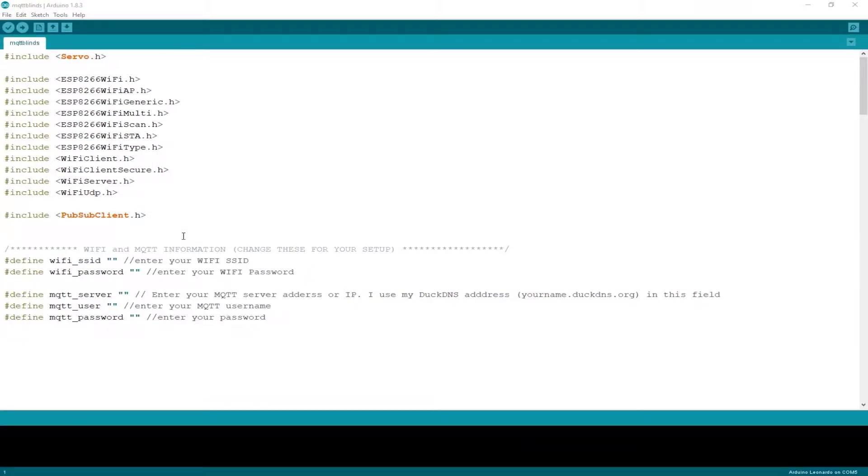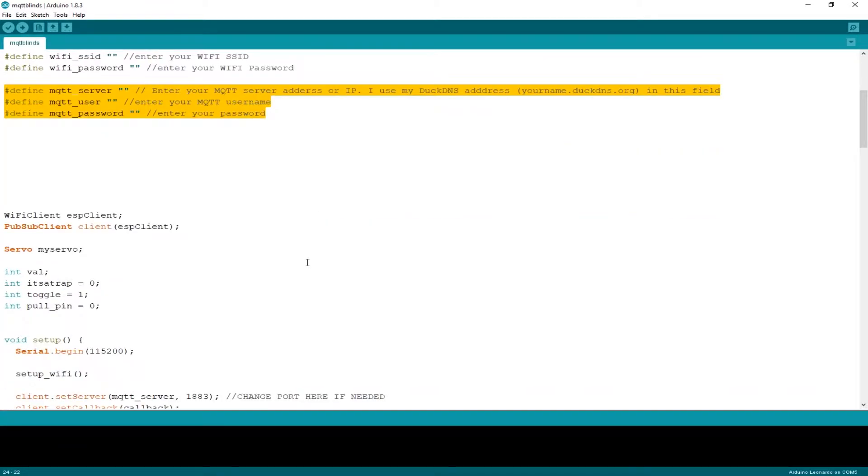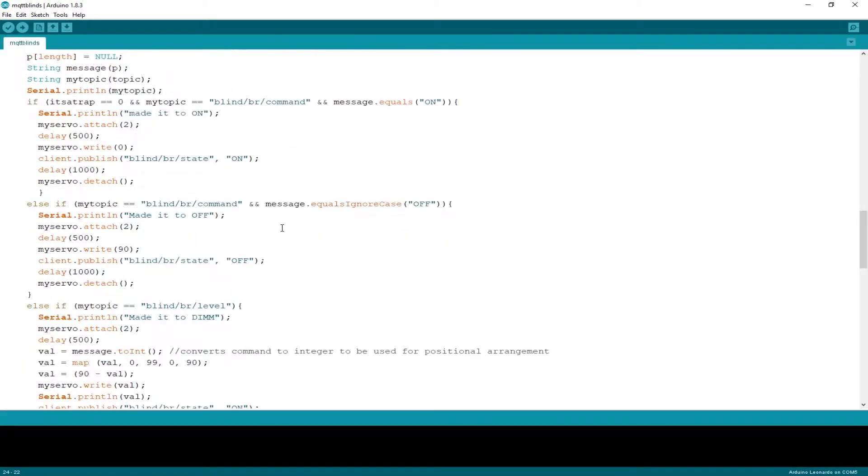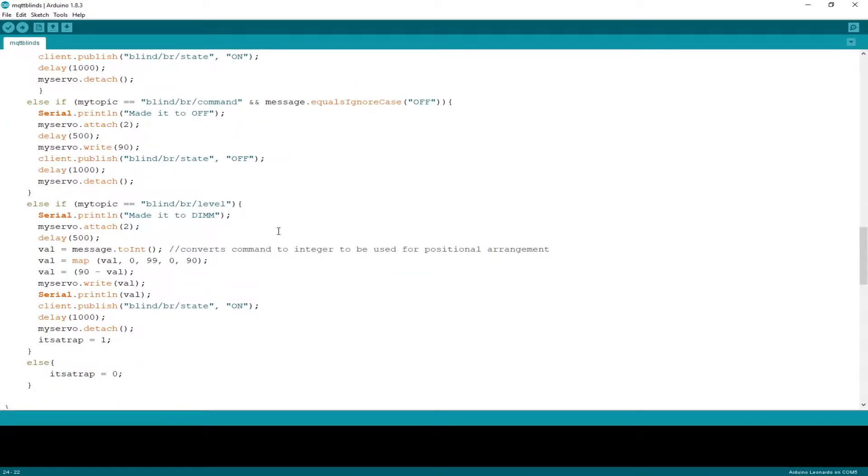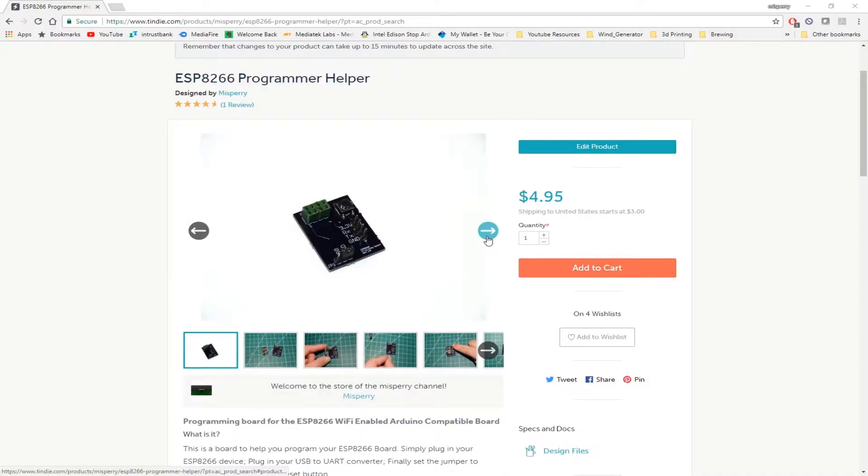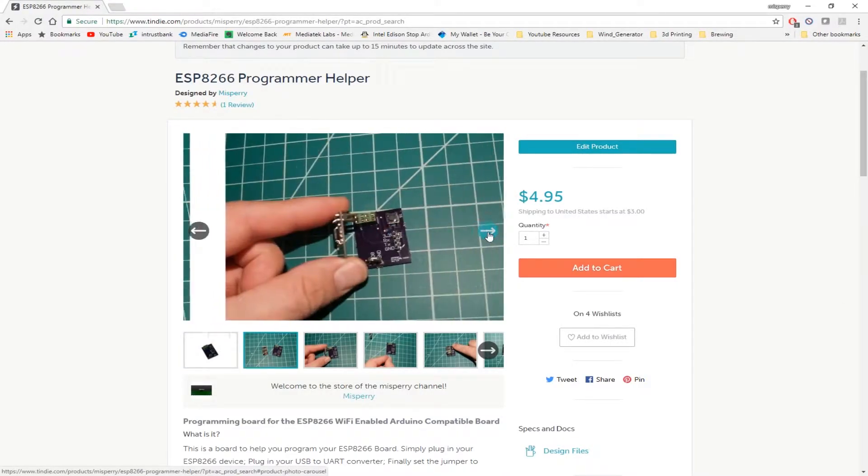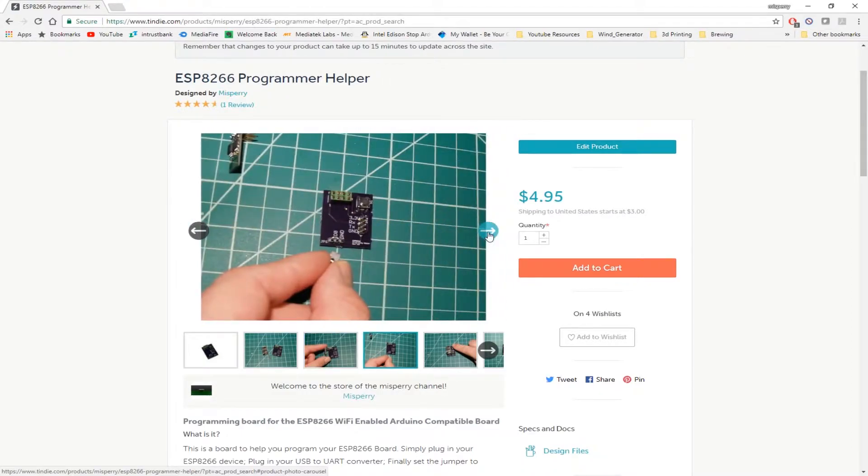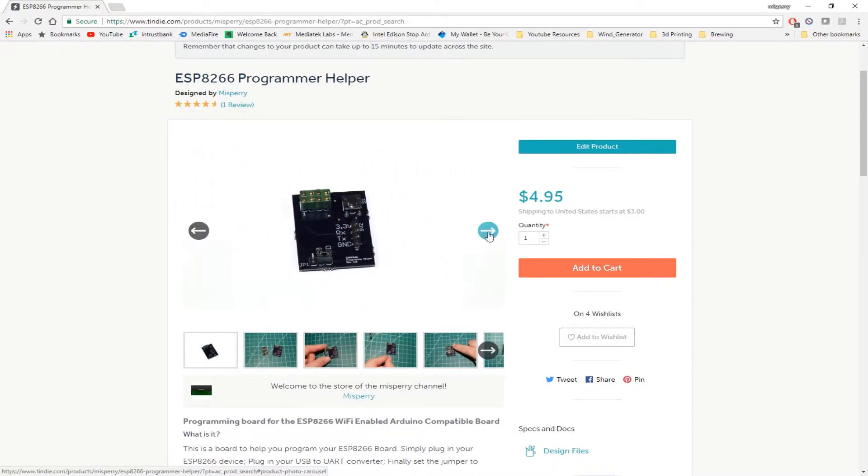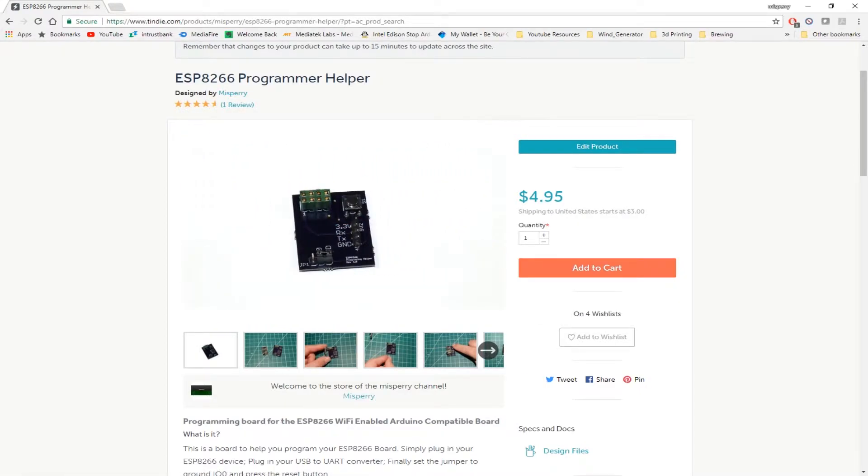Next we will take a peek at the code. All we'll do is enter our wifi information as well as our MQTT server information and scrolling on down through here you will have to also update any commands or specific topics that you have created. Now don't forget that you can always purchase an ESP8266 programmer helper. All proceeds help the channel out but check it out on tindi.com. It will help you program the ESP a lot faster.